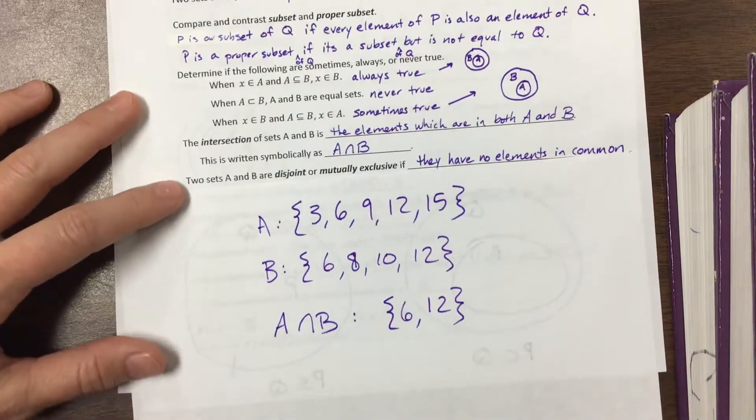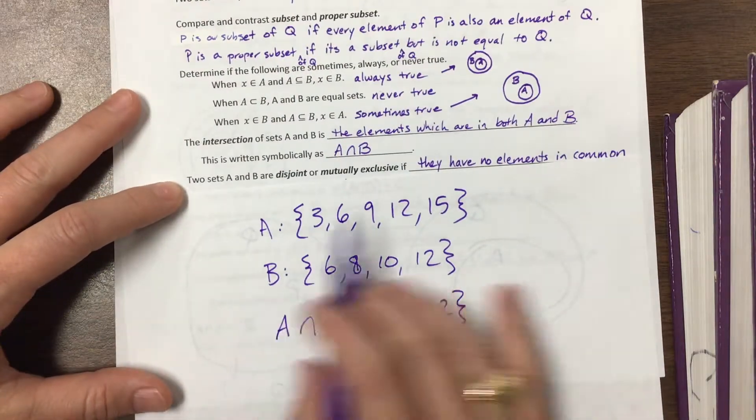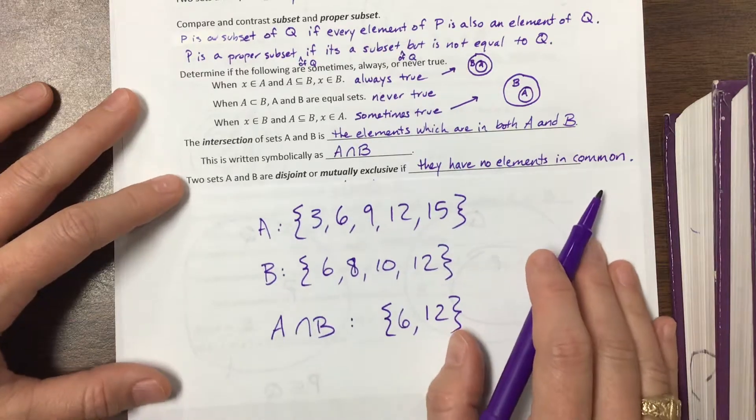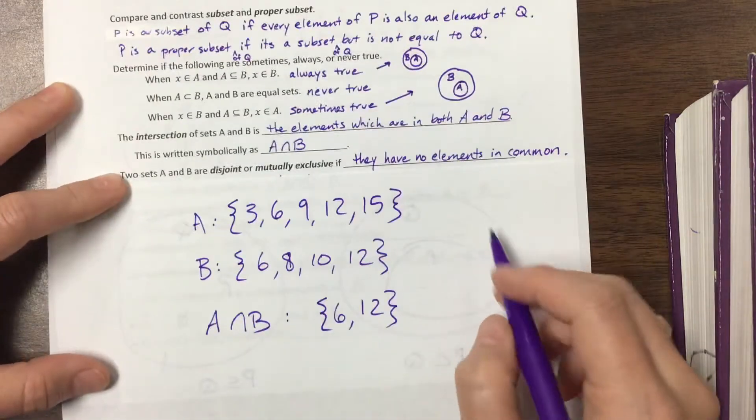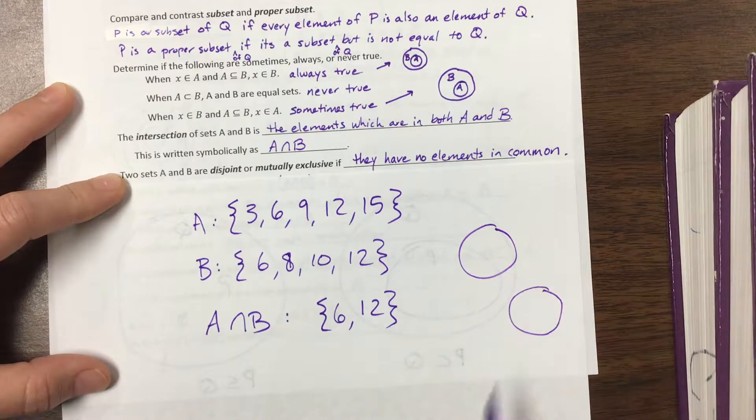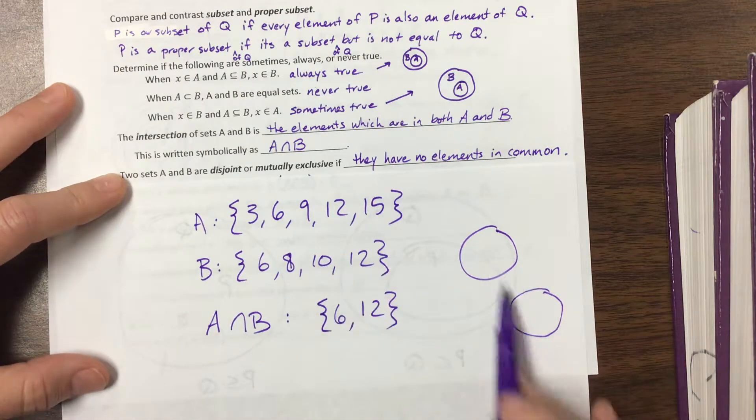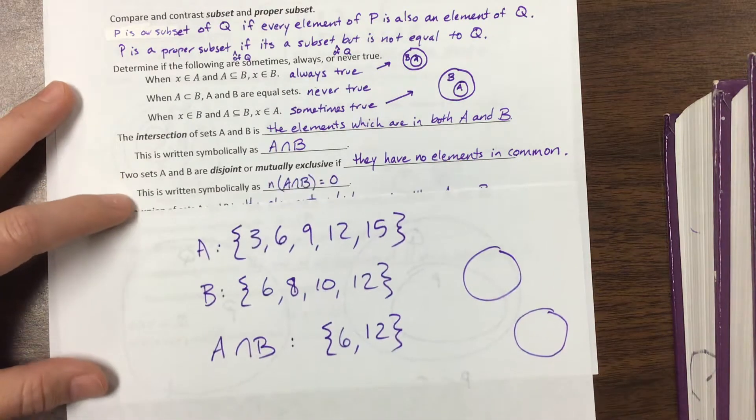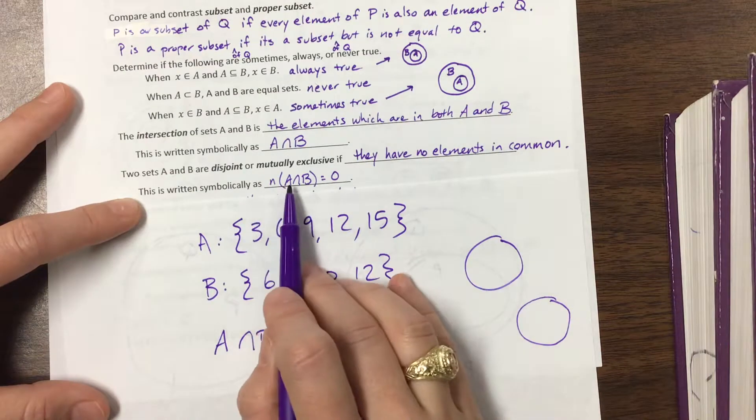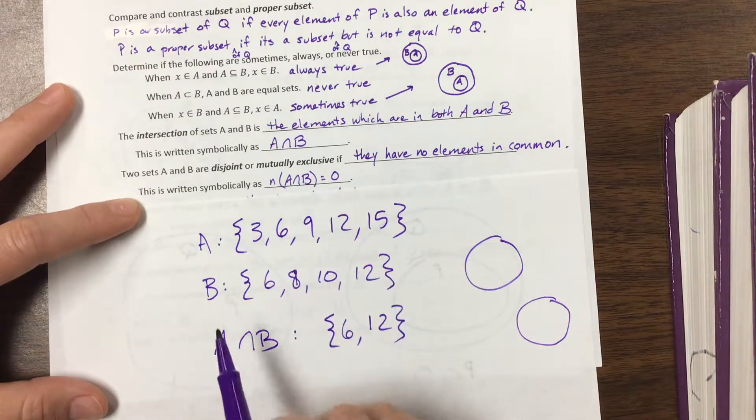They're mutually exclusive or disjoint if they have no elements in common. And so that would be something you could draw a Venn diagram, like here's A and here's B. They have nothing, there's no overlap between them. And that's written as the number of elements in their intersection is equal to 0.